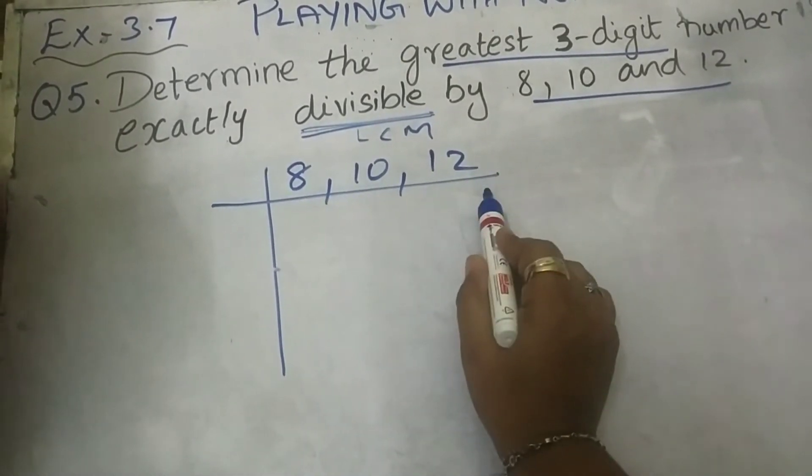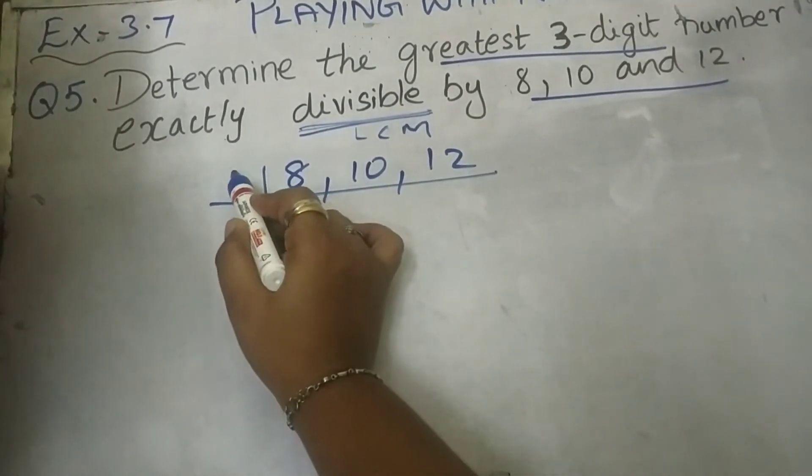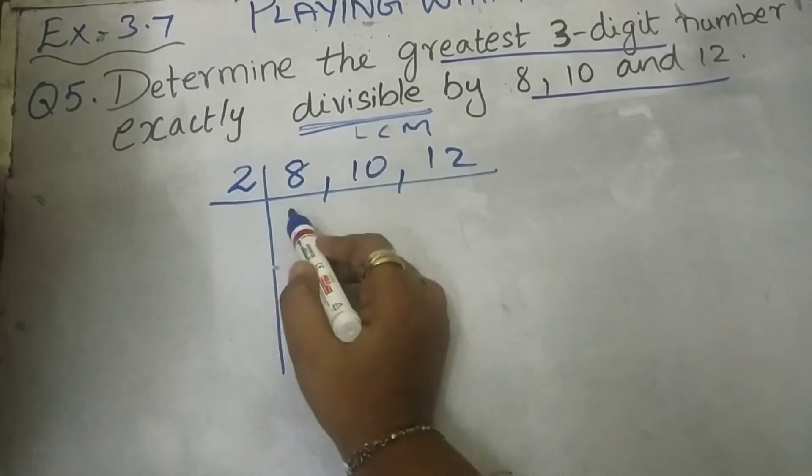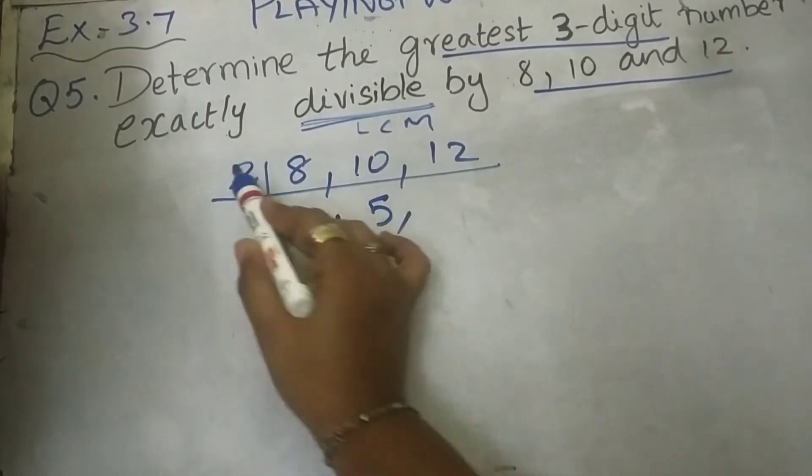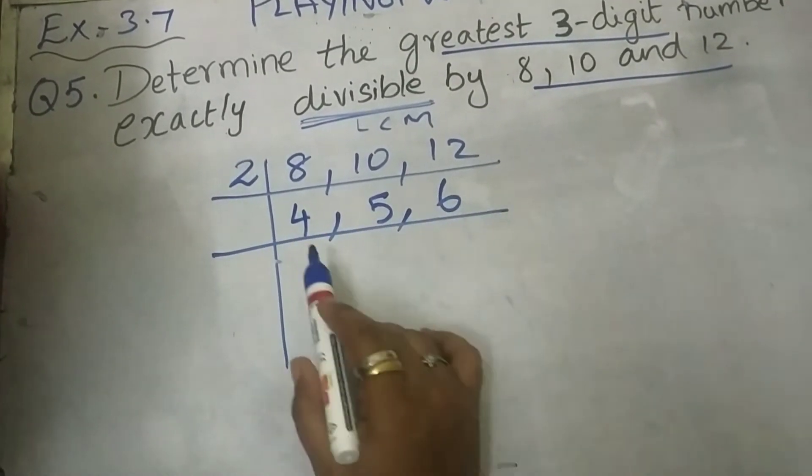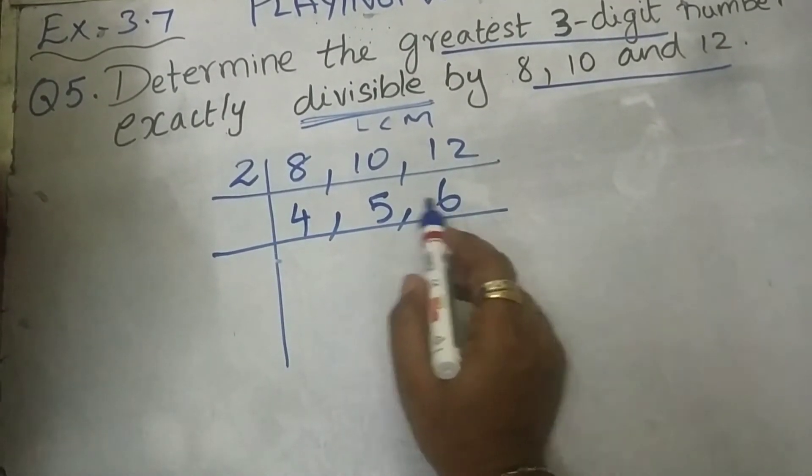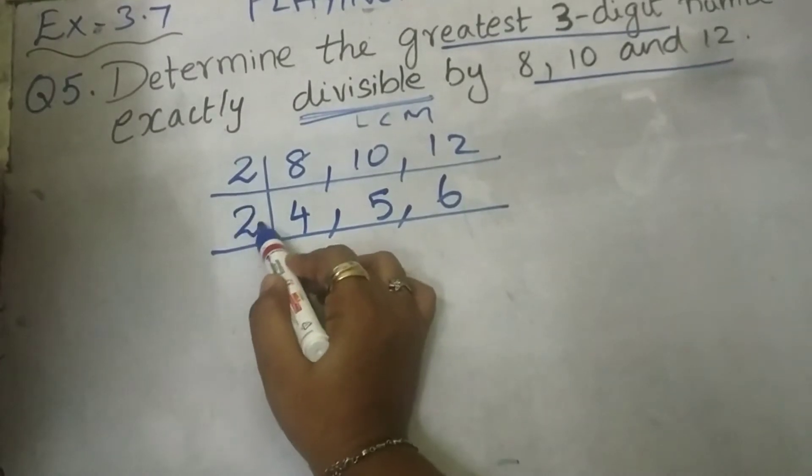So all these are even numbers, so definitely this will be divisible by 2. 2, 4's are 8, then 2, 5's are 10, 2, 6's are 12, then 4, 5, 6. Again, let me complete with the 2 tables.